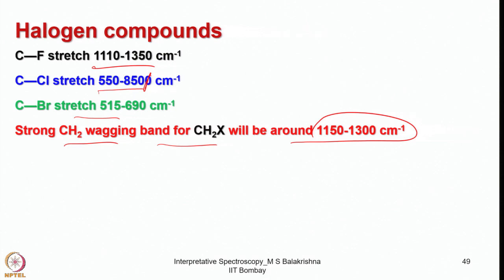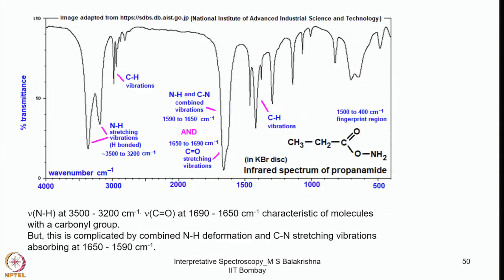These are the important regions for C–X bonds where X is a halogen. The spectrum of propanamide is given here: the N–H stretching vibration is around 3500 to 3200 cm⁻¹ and the carbonyl group comes around 1650 to 1690 cm⁻¹. In the same region, N–H and C–N combined vibrations also come at 1590 to 1650 cm⁻¹, and then the C–H vibrations can be identified. Below 1500 cm⁻¹ is called the fingerprint region.